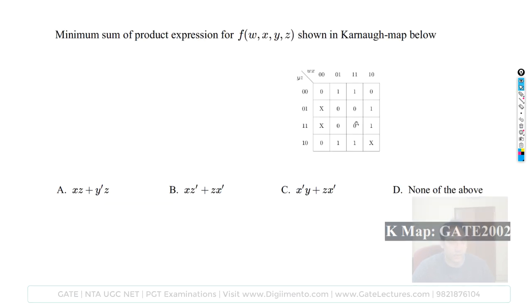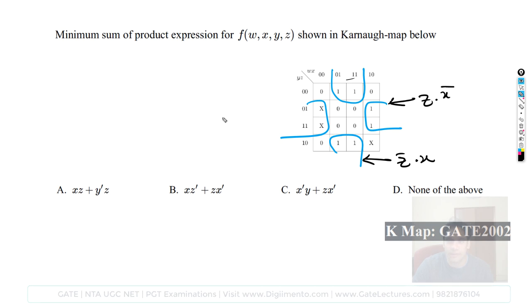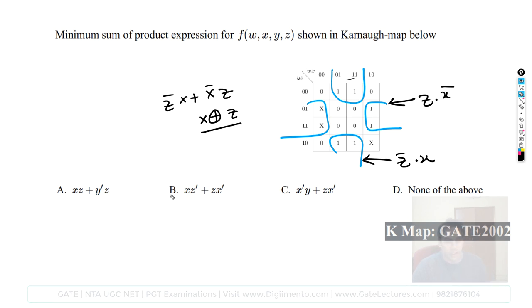Another minimal SOP question: two sub-cubes are possible. The first gives Z-complement·X and the second gives X-complement·Z. The expression is X·Z-complement plus X-complement·Z, which equals X XOR Z — matching option B. Option B is the correct answer.